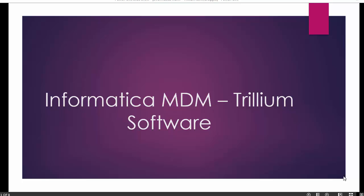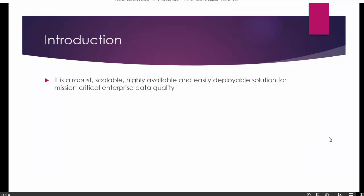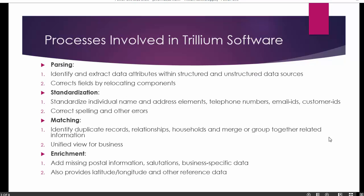So what is Trillium software? It is a robust, scalable, and highly available software that is easily redeployable. It is used to clean business data, also called mission-critical enterprise data, which can be standardized, cleansed, and enriched using Trillium software. There are four basic processes involved in Trillium software.